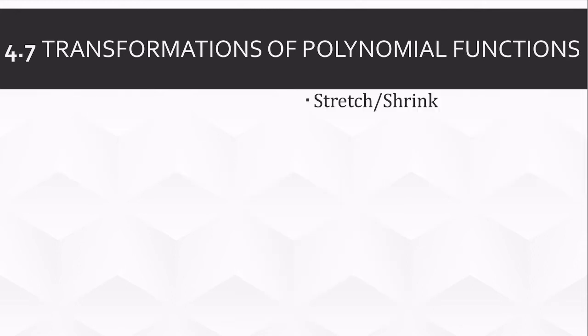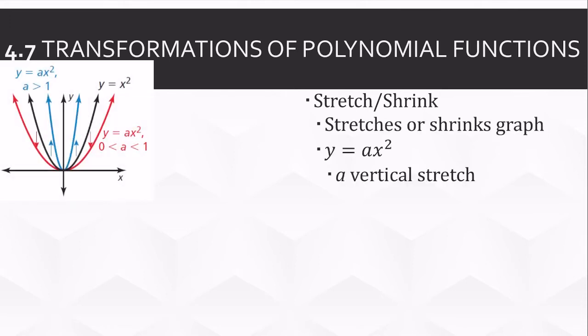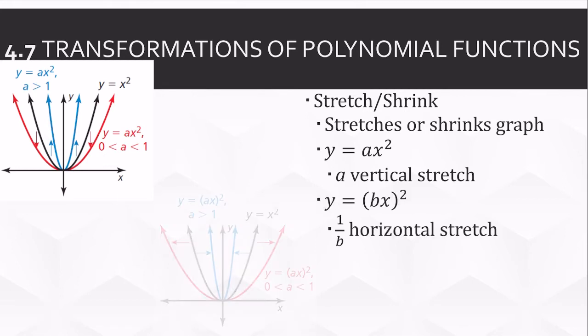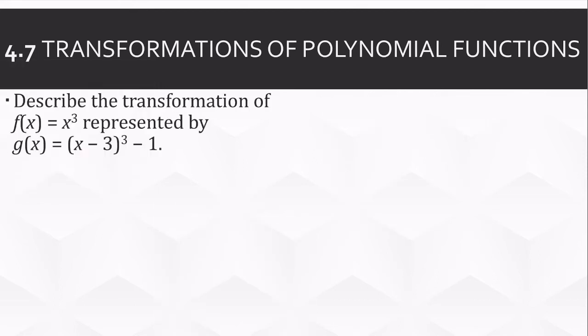The third type of transformation is a stretch or a shrink, which stretches or shrinks the graph. If the a is not in parentheses, it's a vertical stretch. If it's in parentheses, it's a horizontal stretch, but it's by the reciprocal. It's kind of backwards, but anyway. If we have a b here, the stretch is by 1 over b.